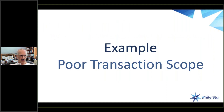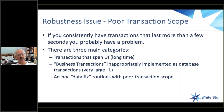Another very common issue that we run into — and this is another robustness sort of issue — is poor transaction scope. You can all probably relate to this: poor transaction scope only ever happens in other people's code. If you consistently have transactions that last more than a few seconds, you probably have a problem. There are three main categories of poor transaction scoping problems.